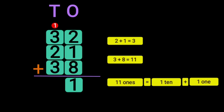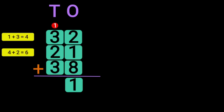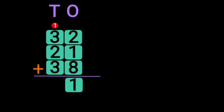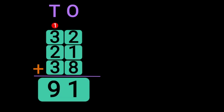Next, begin the addition of the digits in the 10's place: 1 plus 3 gives you 4, 4 plus 2 gives you 6, and 6 plus 3 gives you 9. So 1 plus 3 plus 2 plus 3 in the 10's place gives you 9. The sum of the three two-digit numbers 32 plus 21 plus 38 gives you 91.